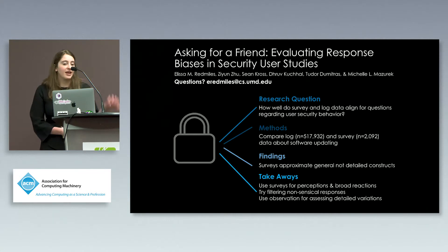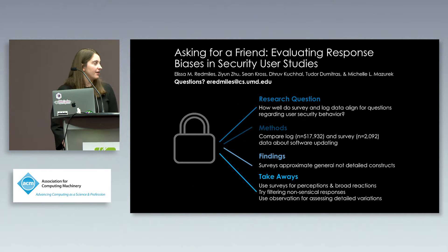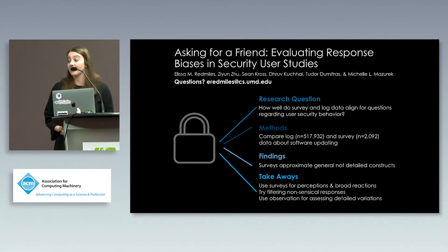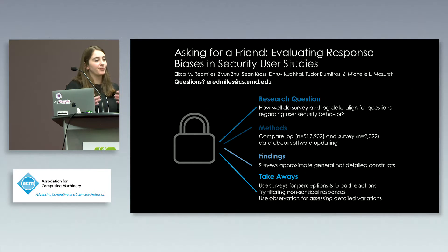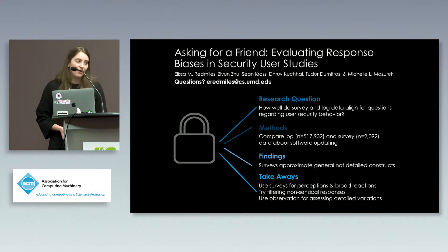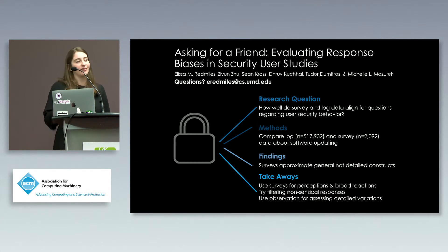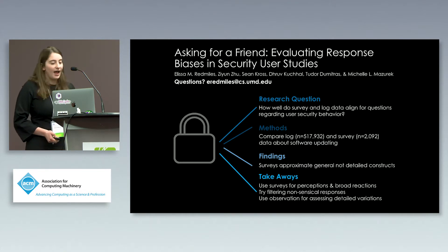In summary: we wanted to understand how well survey and log data align. Looking at software updating behavior, we found that surveys do a good job approximating general constructs but not detailed constructs, and there is a systematic social desirability bias that future work might be able to statistically correct. We recommend using surveys more for perceptions, broad reactions, and asking 'why' questions that you can't get from log data — not for predicting exactly how soon someone will do something or how effective a warning message is. Content-based filtering of nonsensical responses can help, and observation methods may be useful for studying detailed variations.